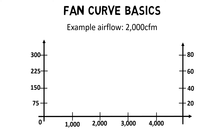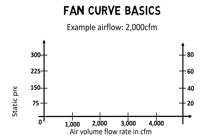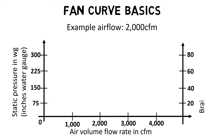The horizontal axis equals air volume flow rate, in CFM or cubic metres per second. The left axis equals static pressure, in inches water gauge (WG), Pascals (Pa), or millimetre water gauge. The right axis equals brake horsepower (BHP) or kilowatts (kW).